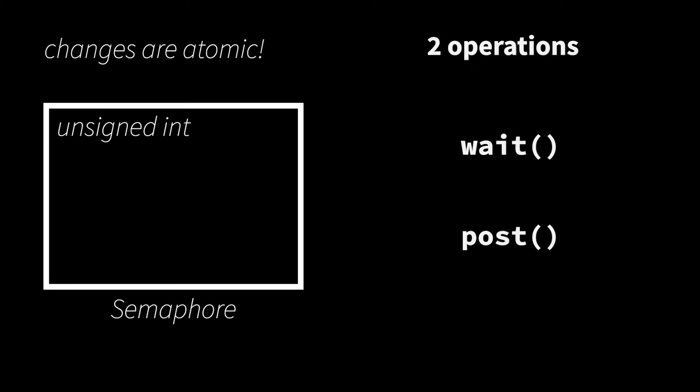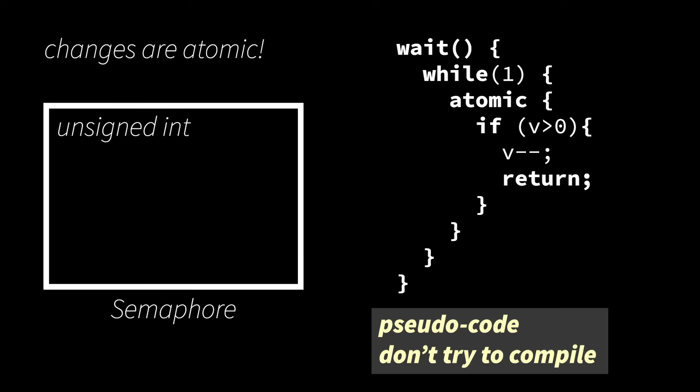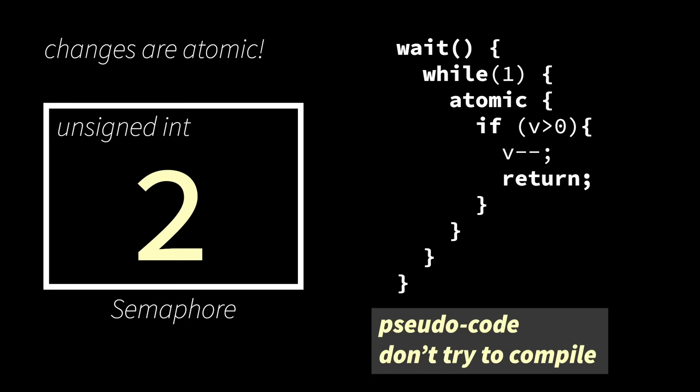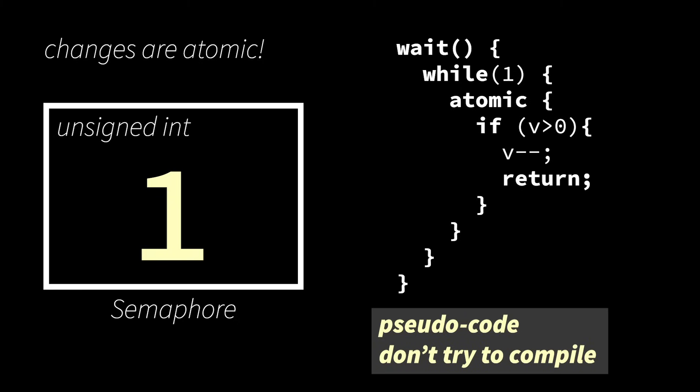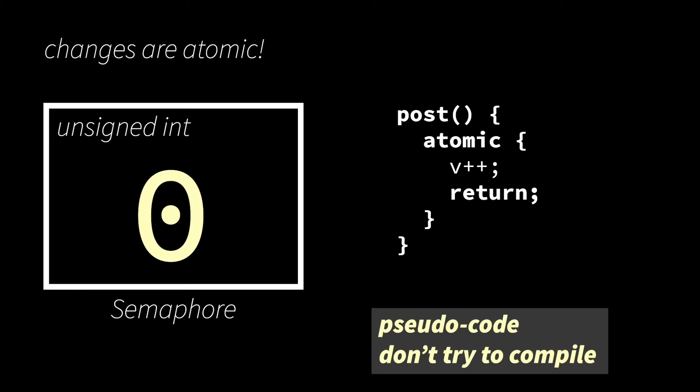Both operations are pretty simple. Wait tries to decrement the value of the semaphore. If the value is greater than 0, it succeeds — it decrements the value and returns. If the value is equal to 0, it waits, hence its name, and it waits until the semaphore's value becomes positive again. Once the value is positive, it's able to decrement it and then returns. Post, on the other hand, just increments the value of the semaphore and returns.